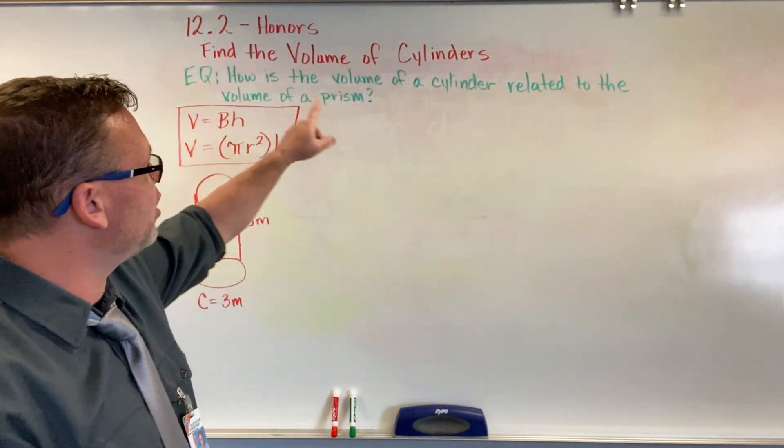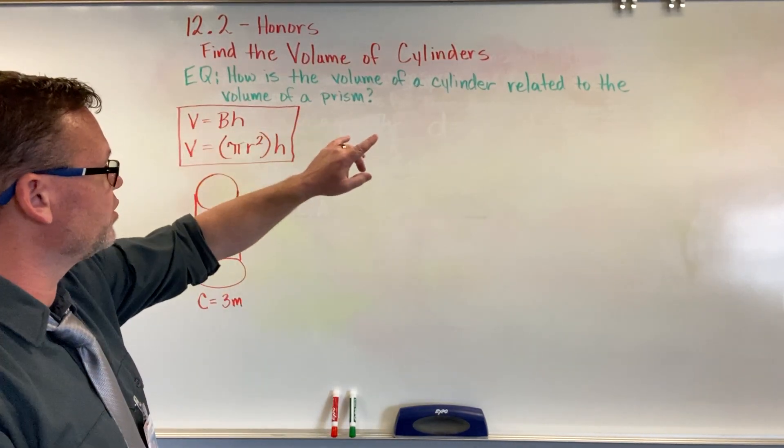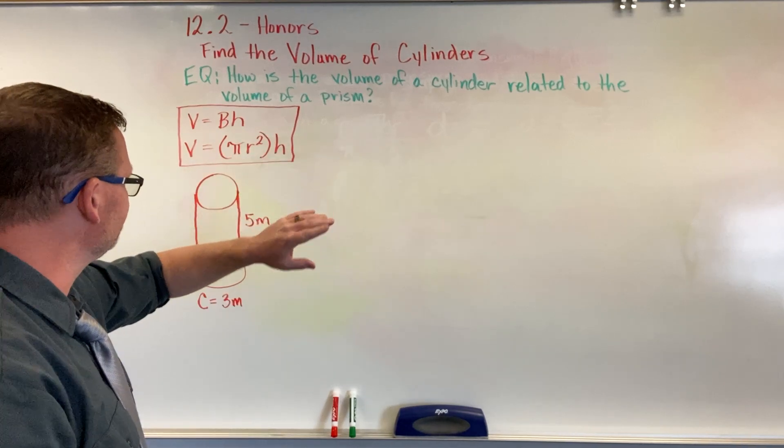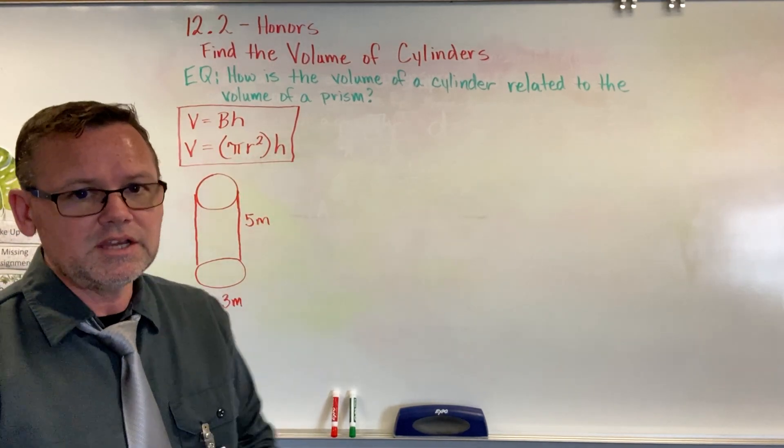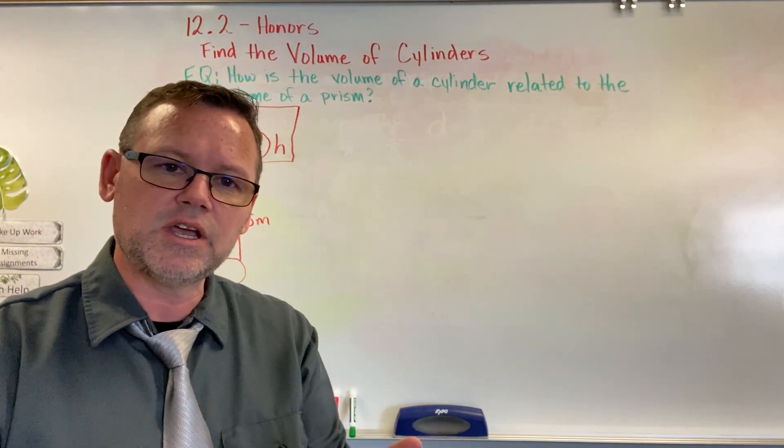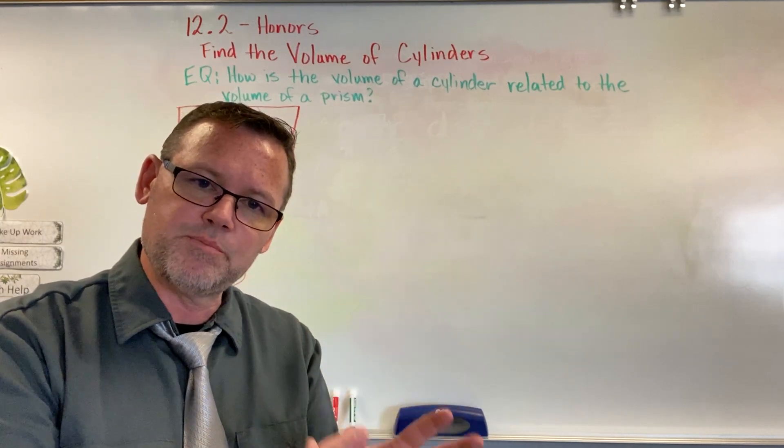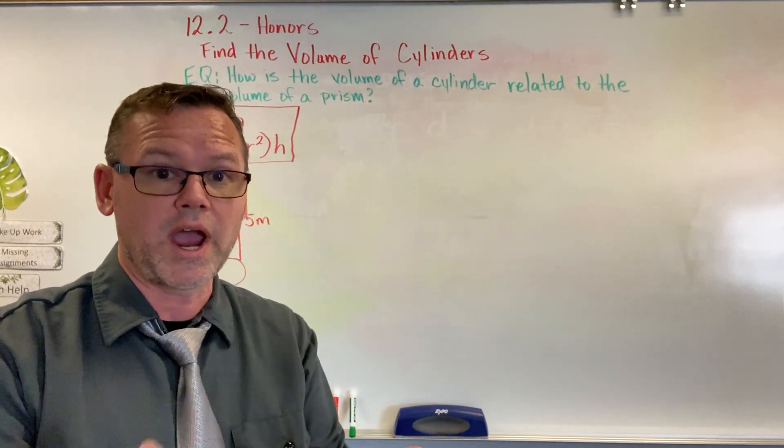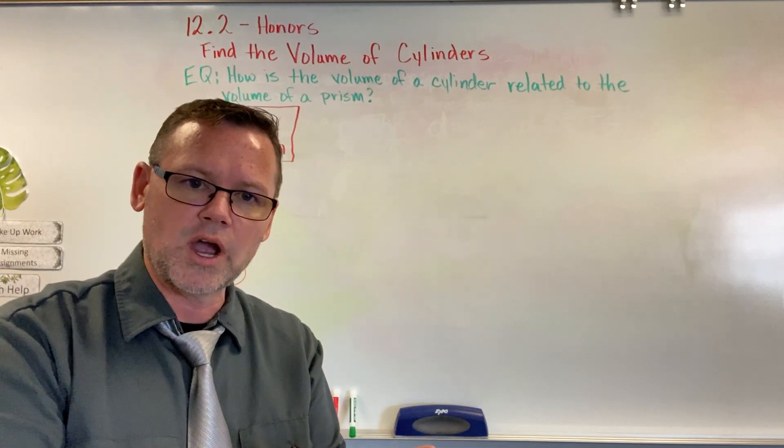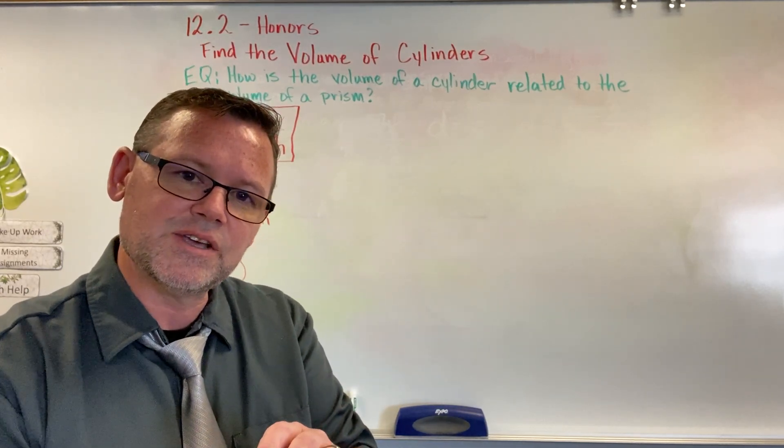We're going to find the volume of the cylinder. Now, we've done that before. So, how is the volume of a cylinder related to the volume of a prism? Now remember, anytime we find the volume of any figure, if it's a rectangular prism, the name of the prism is the base. In other words, the shape of the base would be the rectangle. A triangular prism, the base would be a triangle. In this case, we are doing a cylinder, so the base is a circle.